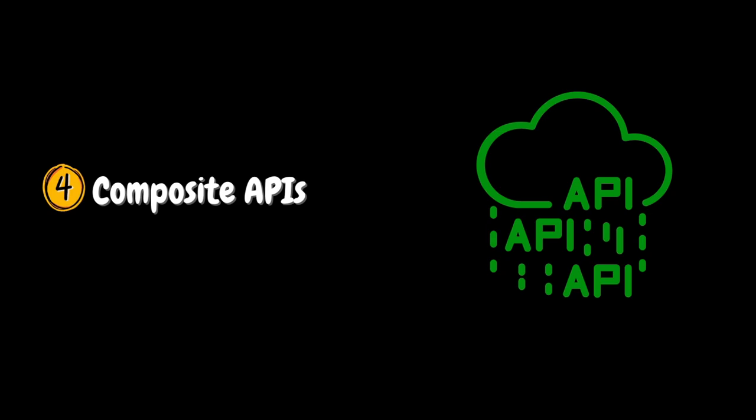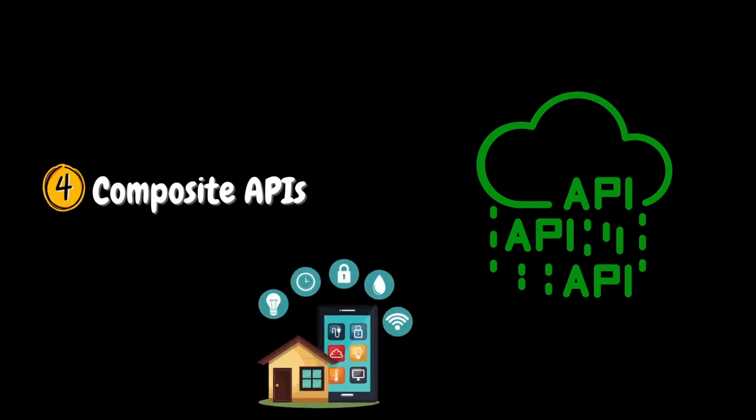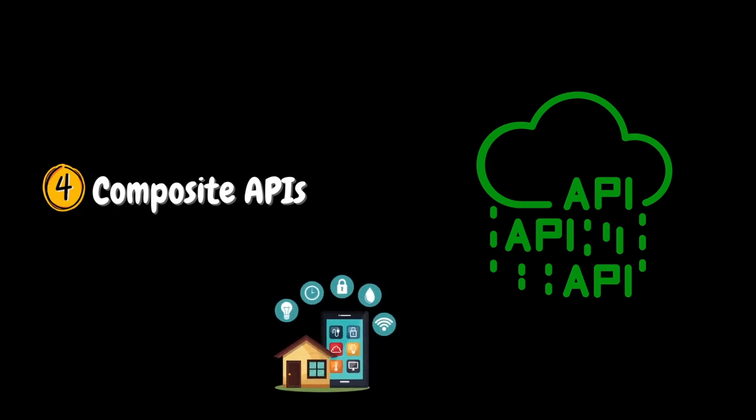And finally, Composite APIs. Composite APIs combine multiple APIs. Instead of interacting with individual APIs separately, developers can use a Composite API to perform a sequence of operations or obtain data from multiple sources with a single API call. For example, in a smart home application, a Composite API might aggregate data from different devices and services to provide a single endpoint for controlling and monitoring various connected devices.